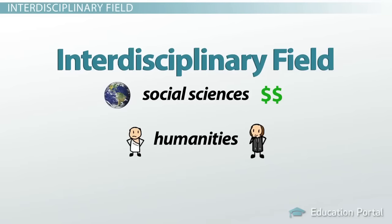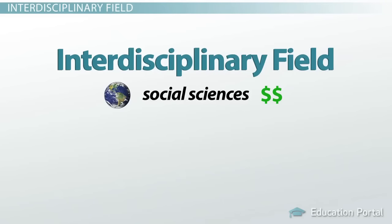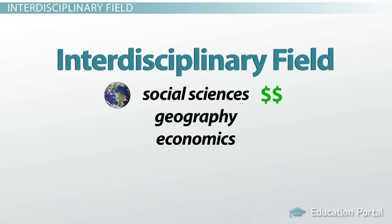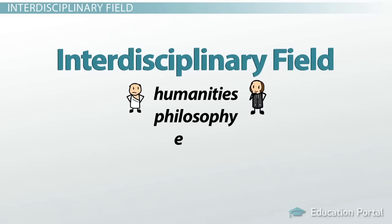The social science fields that are incorporated into environmental science include geography, economics, and political science. Philosophy and ethics are the two fields within the humanities that are also included in environmental science.